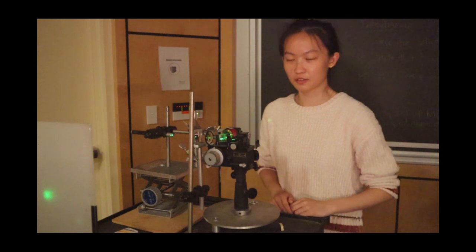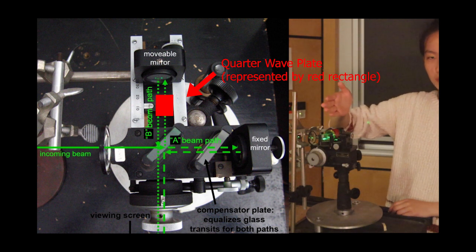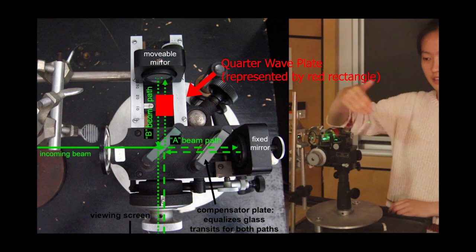Here is the modified Michelson interferometer. We've added an element, this is the quarter wave plate. This is in the path of beam B, so it's only affecting B, it's not affecting A.